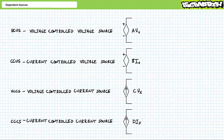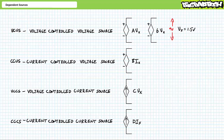Number one: voltage-controlled voltage sources, where output voltage is proportional to some dimensionless constant A times the controlling voltage value Vx. For example, consider a voltage-controlled voltage source where output voltage is six times Vx, and Vx happens to be two volts. The output would be six times two volts, or 12 volts. If, however, the controlling voltage signal dropped to 1.5 volts, the output would be six times 1.5 volts, or nine volts.